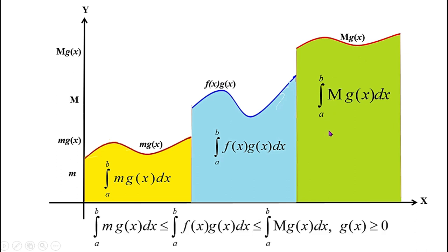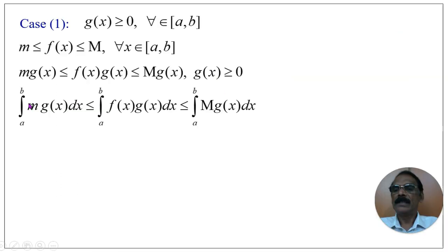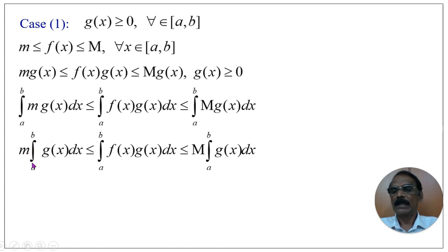From this inequality, we can confirm that the integral from a to b of m·g(x) dx ≤ the integral from a to b of f(x)g(x) dx ≤ the integral from a to b of M·g(x) dx. Since m and M are constants, we take them outside the integral: m·∫[a to b] g(x) dx ≤ ∫[a to b] f(x)g(x) dx ≤ M·∫[a to b] g(x) dx.